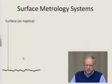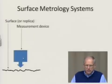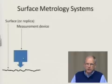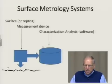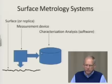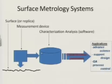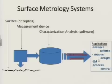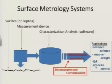In a surface metrology system, we start with the surface or the replica. Then we use some kind of measurement device — there are many different devices now that have recently become available for making detailed measurements of surface texture or topography. The characterization analysis is sometimes included in the measurement device and can also be performed by software after the measurement. The result of the characterization analysis are characterization parameters to support advancing the science of surfaces, supporting product and process design, quality assurance, and process control. These characterization parameters, in order to be successful, need to be capable of discrimination and correlation.